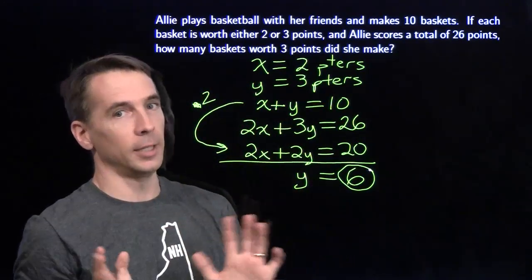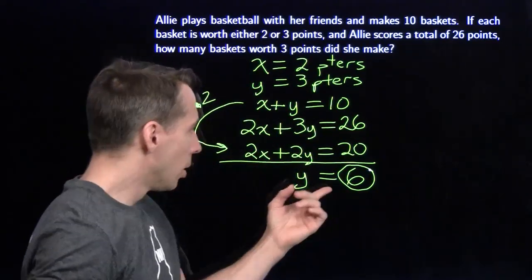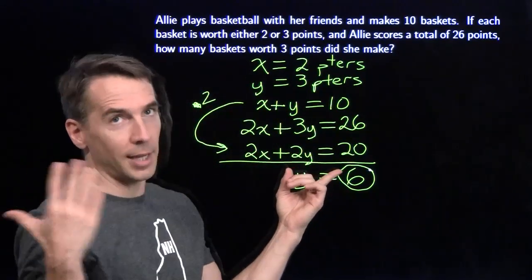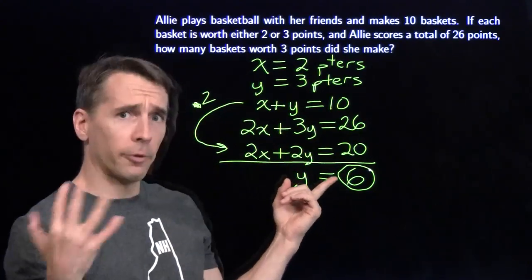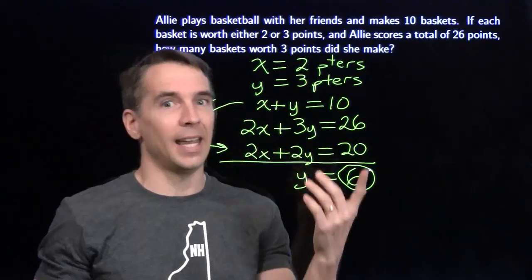Now you know what to do, right? You don't just move on to the next problem. We're going to check this answer real quick. We're going to say, okay, 6 three-pointers, that's 18 points. That means our other 4 shots are 2 pointers. That's another 8 points. 18 and 8 is 26.